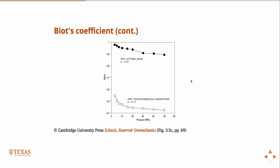Here's some real values, again, on real data. For a dry Ottawa sand with a porosity around 0.33, you see for low confining pressures, the bulk modulus is in fact close to one, and for higher confining pressures, it does reduce a little bit.